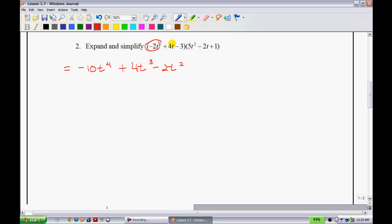Alright. So now that I've done that. I've kind of dealt with that one. Now I'm going to take the next one. The 4t and multiply it on it. So when I do that, I have 4t times 5t squared gives me plus 20t cubed, minus 8t squared, plus 4t. And then my last ones is just bringing this negative 3 and multiplying it by these guys. We have negative 15t squared, plus 6t, minus 3.